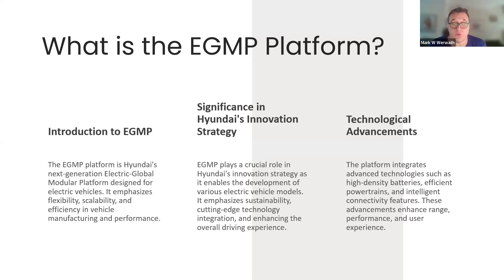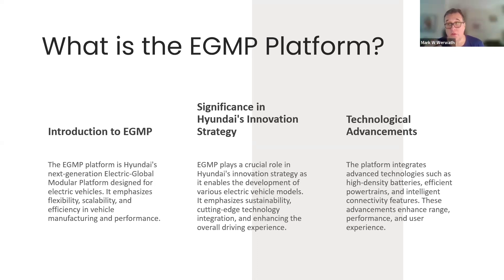eGMP plays a crucial role in their innovation strategy — it becomes the hub. From this hub they can branch out in many directions: different form factors, different markets, different types and differently branded vehicles. There's also a third brand called Genesis that is also using eGMP, with beautiful, very different looking vehicles — much more like a sports car.